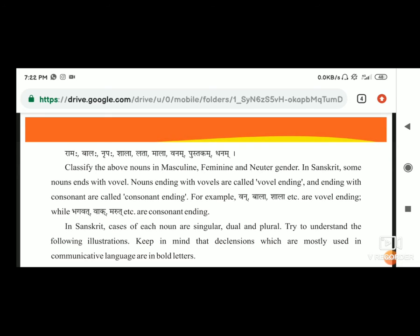Ramah, balah, rupah, sala, lata, mala, vanam, pustakam, dhanam - classify the above nouns in masculine, feminine and neuter gender.